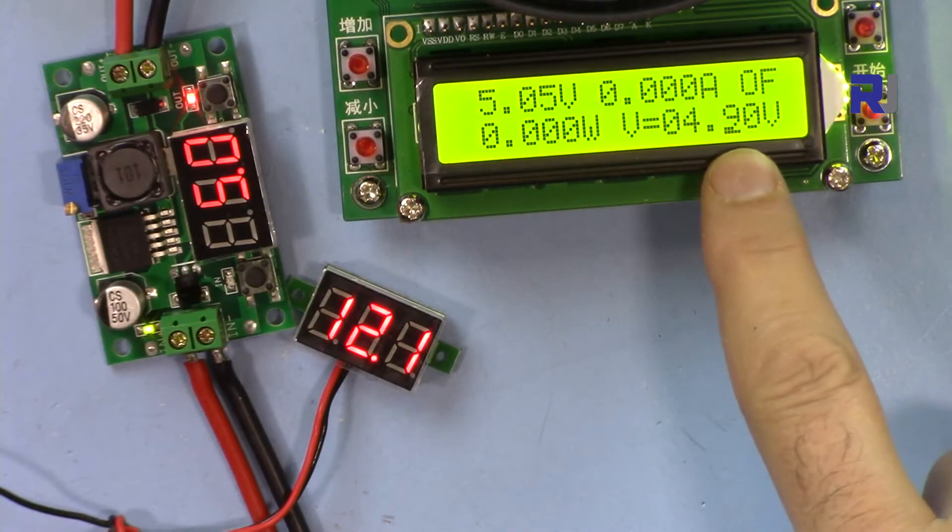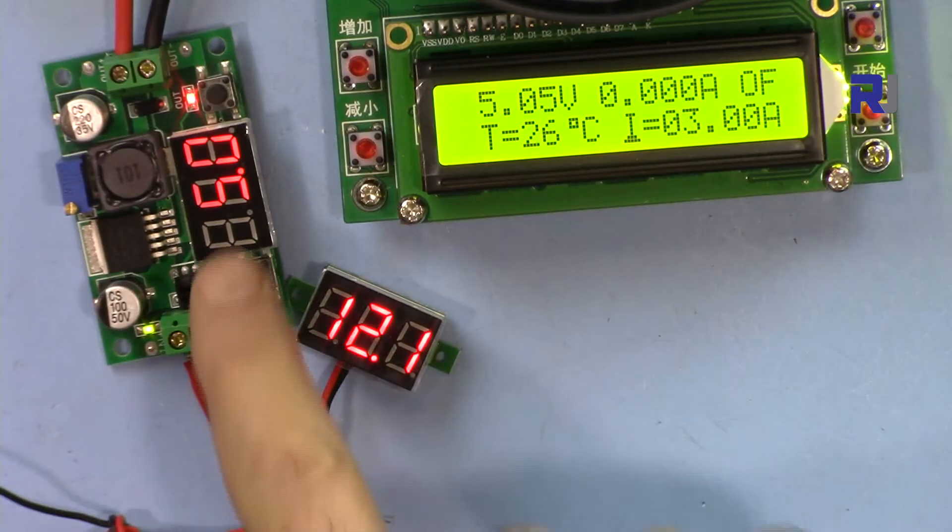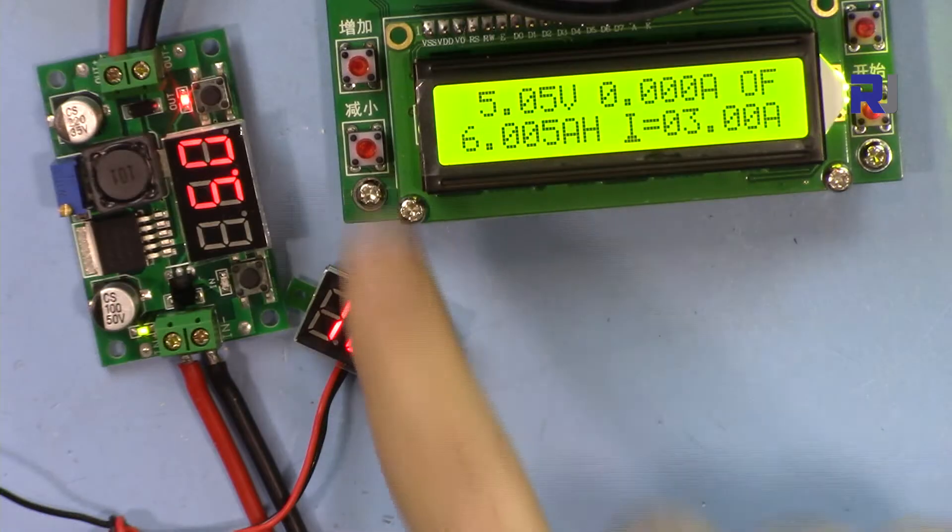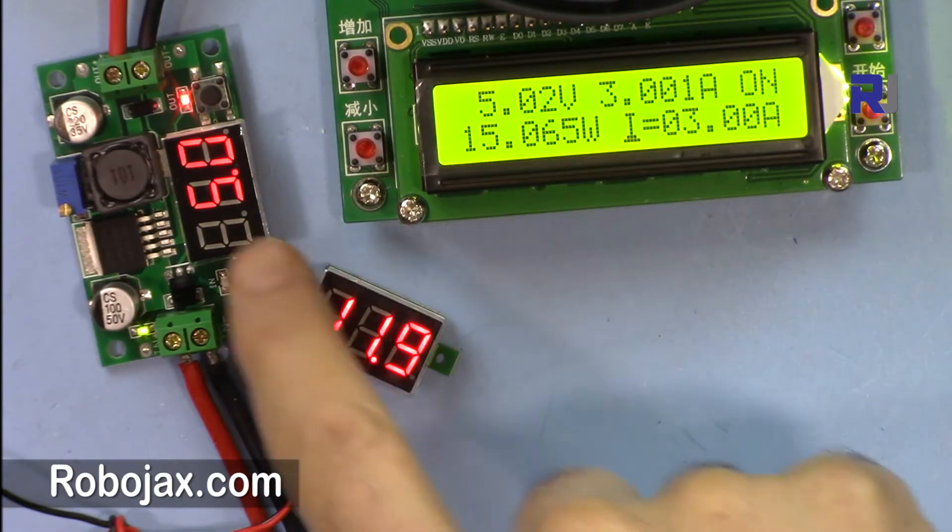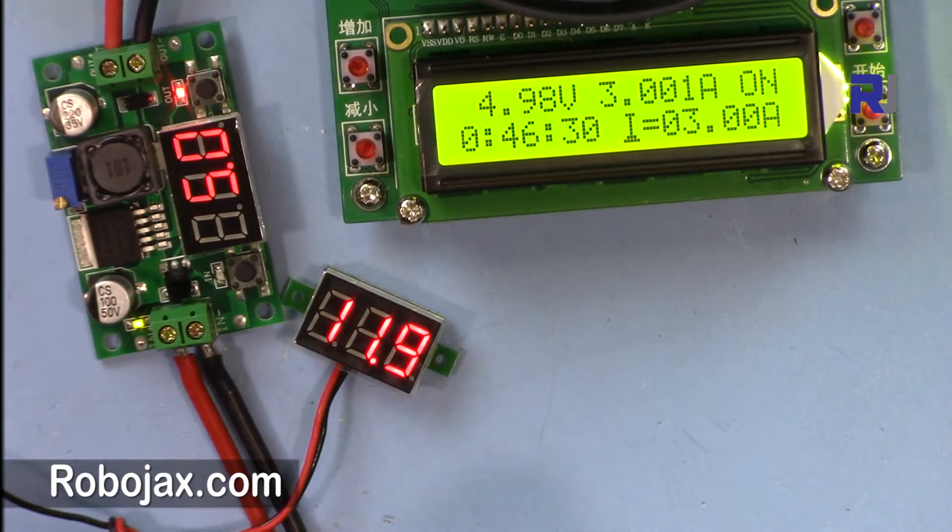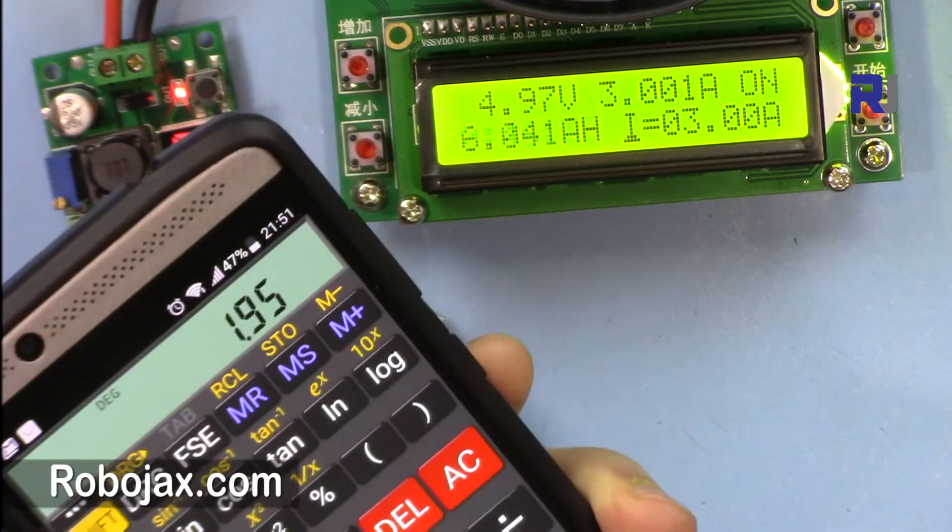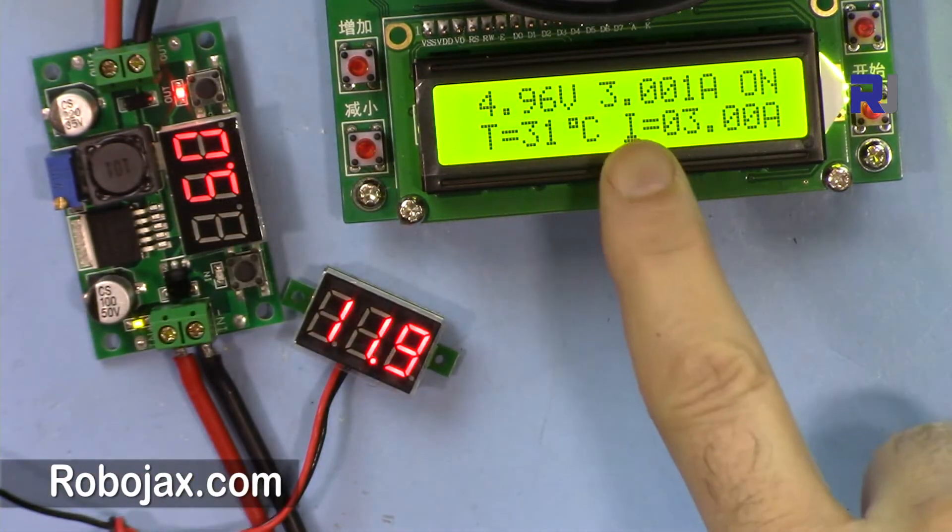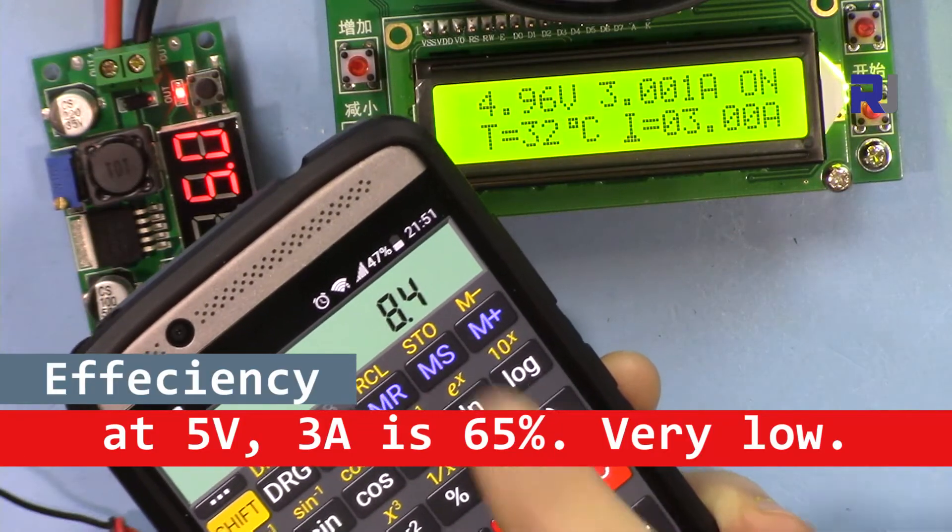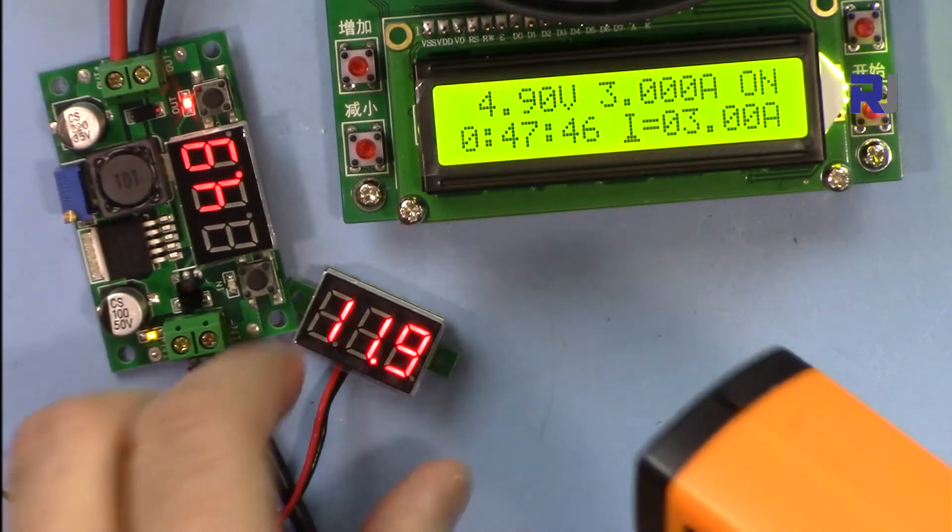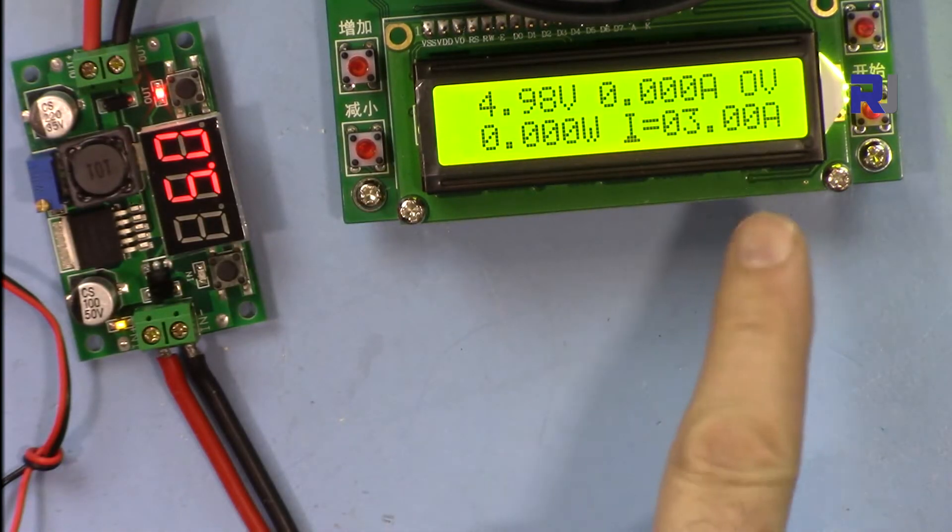My electronic load is set at 4.9 and the current is set at 3 ampere. Let me turn it on. The output is 5 volts, input is 12 volts. We want to see if it can handle 3 ampere. Now it's 3 ampere, the voltage is there. This circuit is drawing 1.95, so 12 times 1.95 is 23.4 watts. The output is 3 times 5, 15 watts. So 23 minus 15, 8 watts is being dissipated here, very hot on this side.